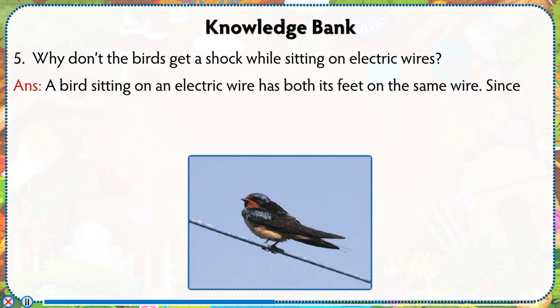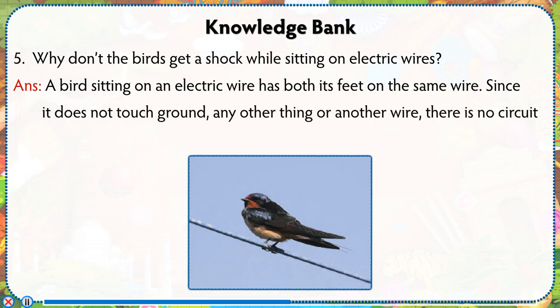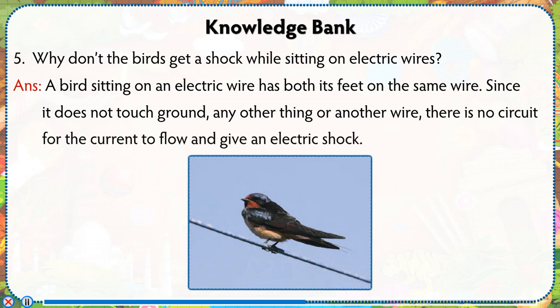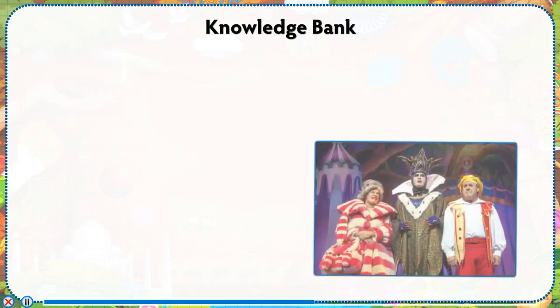Why don't birds get a shock while sitting on electric wires? A bird sitting on an electric wire has both its feet on the same wire. Since it does not touch the ground, any other thing, or another wire, there is no circuit for the current to flow and give an electric shock.